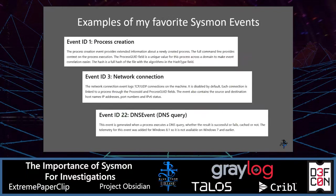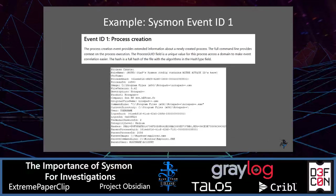Let's talk about some examples of my favorite Sysmon events: Event ID 1 (process creation) is fabulous, Event ID 3 (network connection) is also fabulous, and Event ID 22 (DNS event) is fabulous as well.